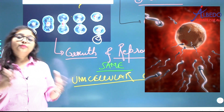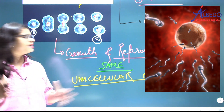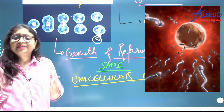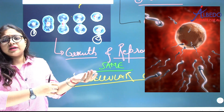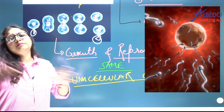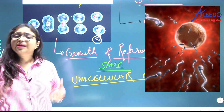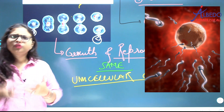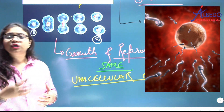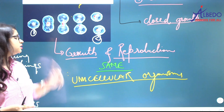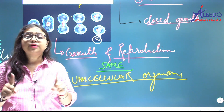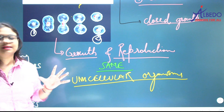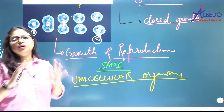What about multicellular organisms? If there is cell division in a multicellular organism, it means growth is occurring, but that does not mean reproduction has occurred. The organism has just gone through a phase of growth. So remember: in unicellular organisms, growth and reproduction are the same — they are twin characteristics. This is about growth.